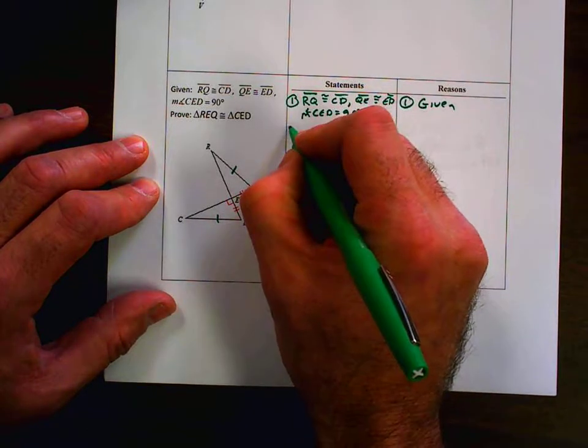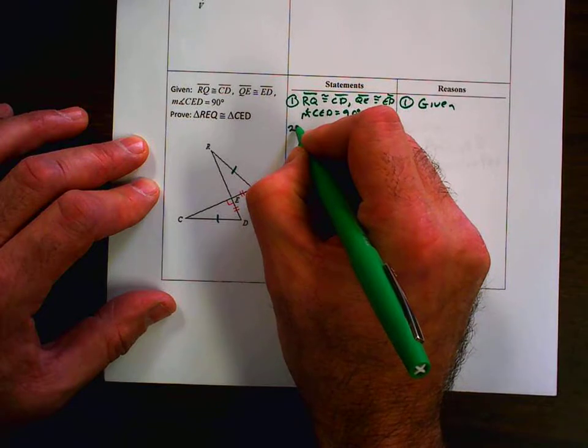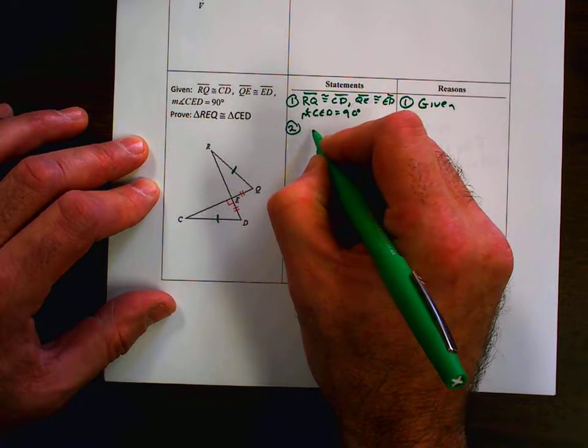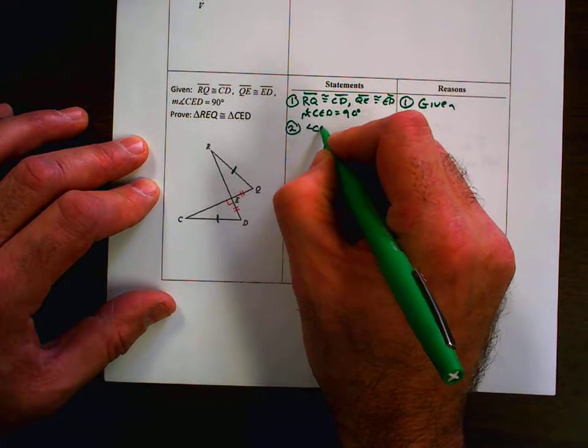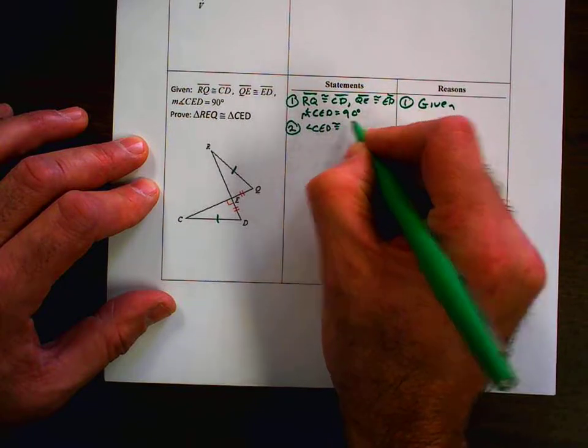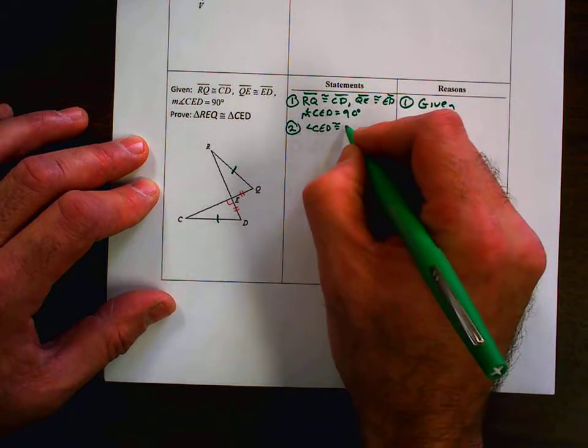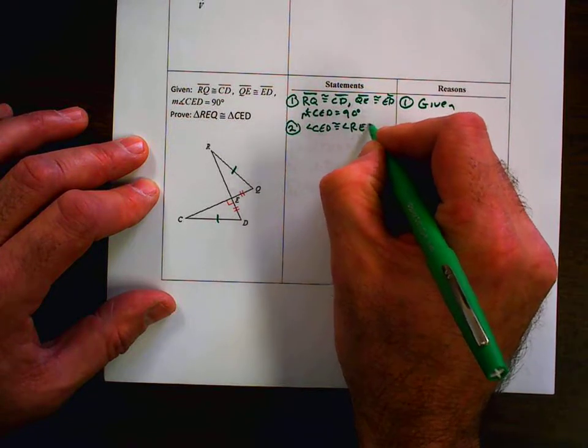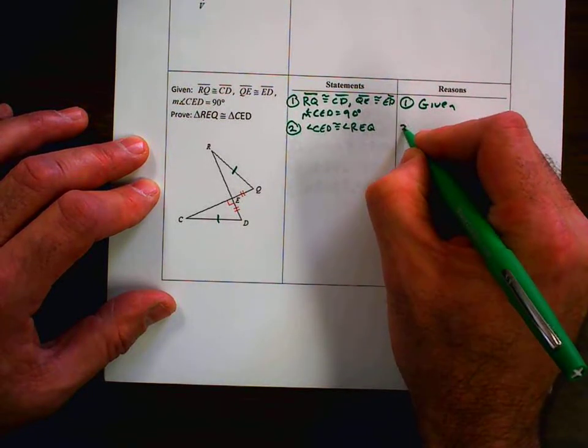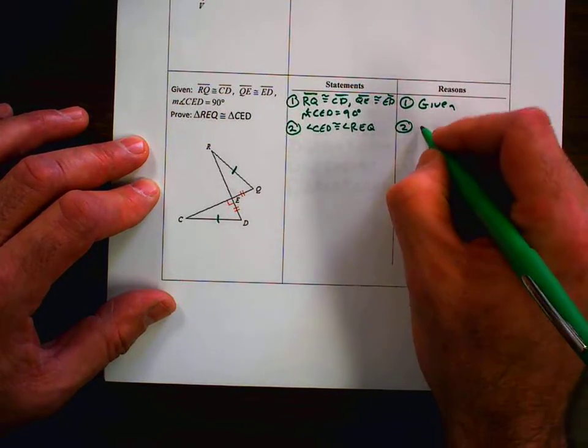We have vertical angles, and we can go ahead and name those. And those vertical angles, angle CED is going to be congruent. Vertical angle theorem gives us congruency, CED congruent to REQ. Both being angles, of course. And those are congruent by vertical angle theorem.